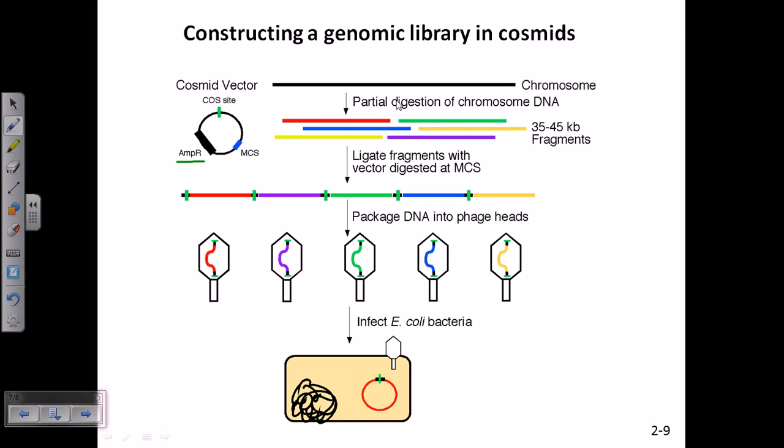Now, the similar procedure, we cleave our chromosomal DNA with partial digestion. After partially digesting, the fragments are looking like 35 to 45 KB and we know cosmids are pretty good at packaging this particular size of the segments.